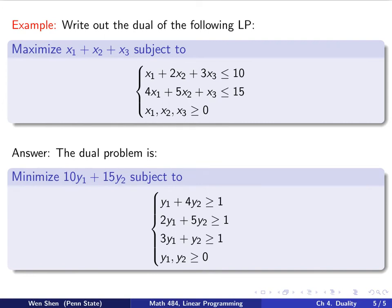For the dual, we need to introduce variable y1, y2, right? So we know for each constraint here, we would introduce a variable. So y1 for this, y2 for this. And then, the objective function becomes this column here. So 10 y1 plus 15 y2. So that's what you want to minimize.